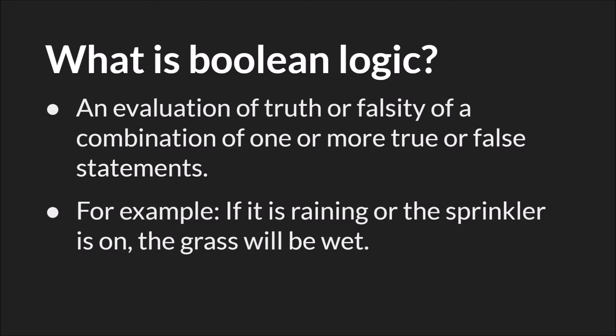For example, if it is raining or the sprinkler is on, the grass will be wet. Here, is raining is a statement which can be true or false, and the sprinkler is on is a statement which can be true or false. And together we have a combination of two true or false sentences or statements that we need to evaluate. And that's what Boolean logic is about.